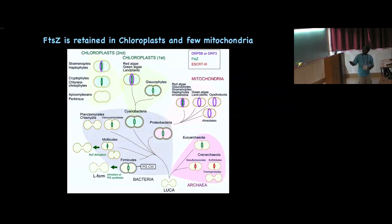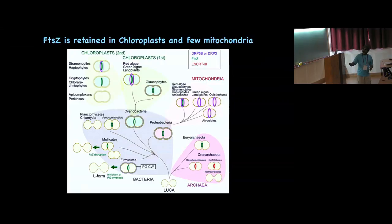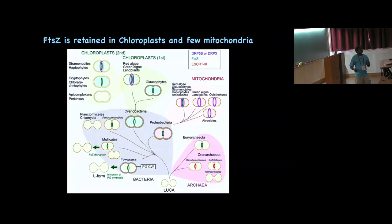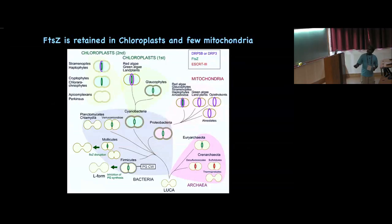There is another important protein — dynamin — that has also become involved in organelle division. In chloroplasts, an FtsZ ring forms and dynamin is also present in further diversified chloroplasts. In mitochondria, very few still have FtsZ; FtsZ seems to have been lost from mitochondria and dynamins have completely taken over mitochondrial division. When secondary symbiosis happened, some chloroplasts completely lost the FtsZ ring and have nothing left to do cytokinesis there.